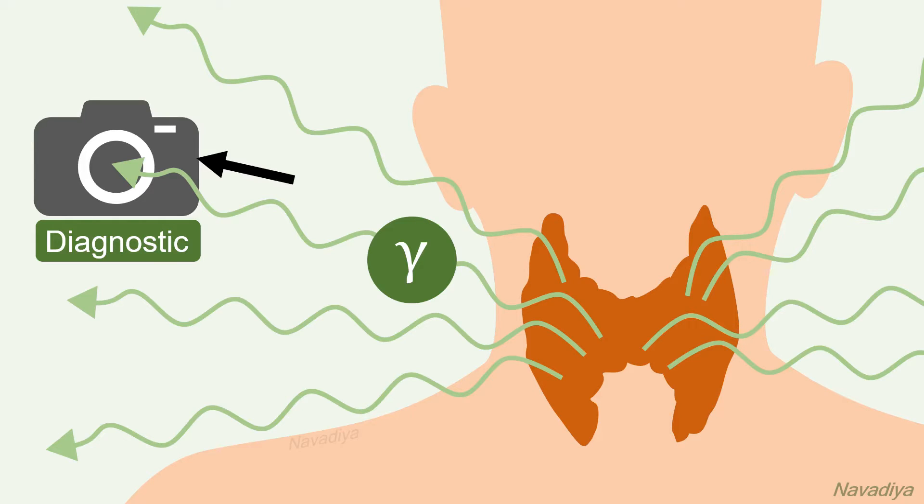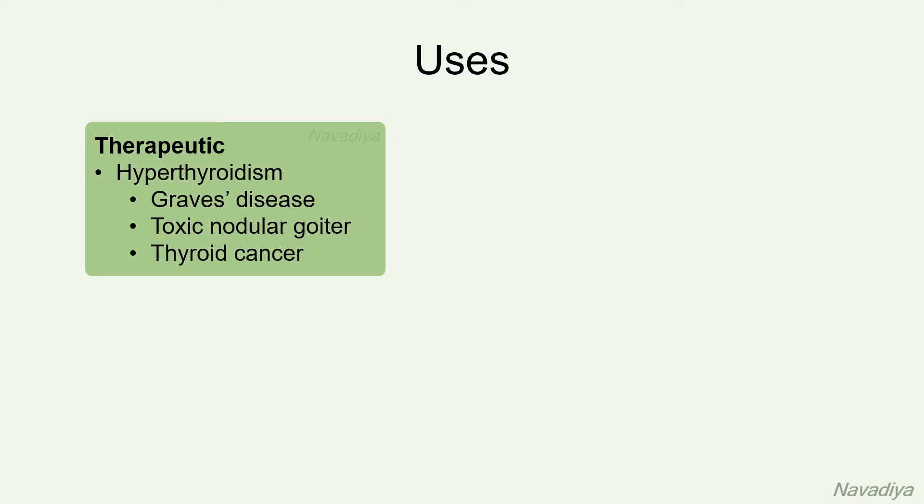The half-life of radioactive iodine is about 8 days. Therapeutically it is used for hyperthyroidism — for example, Graves' disease, toxic nodular goiter, and thyroid cancer. Diagnostically, it is used in low doses to identify some thyroid conditions.